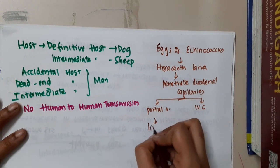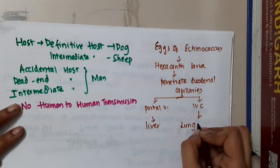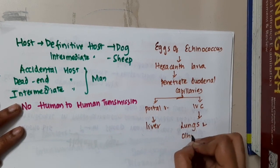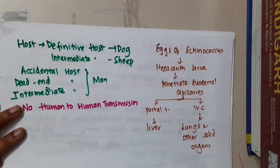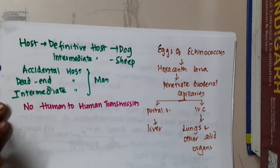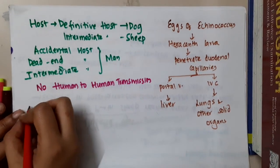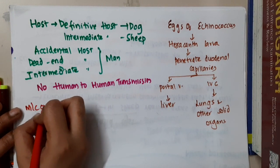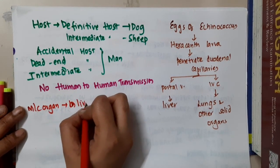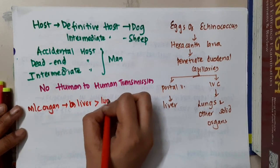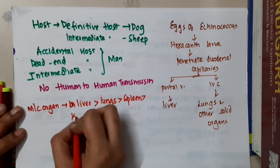Once the hexacanth larva penetrates the portal vein, it goes to the liver. It also penetrates the inferior vena cava and goes to the lungs and other solid organs. The most common organ involved in hydatid cyst is the liver, followed by lungs, then spleen, then kidney.